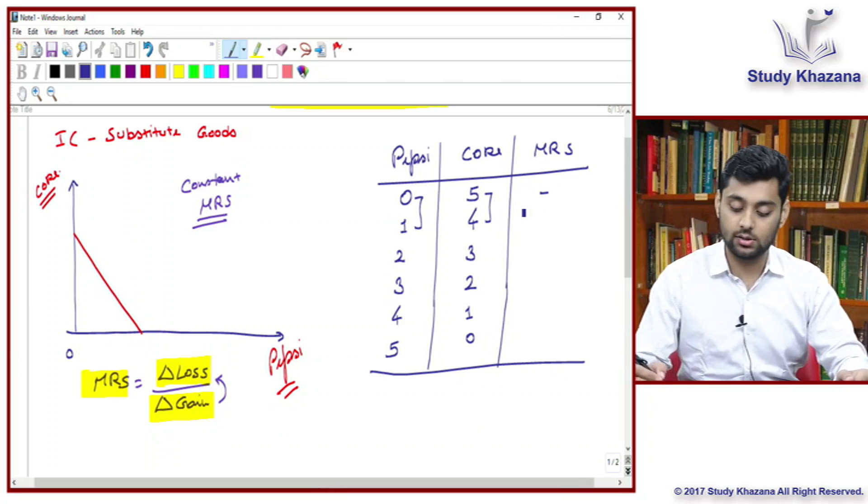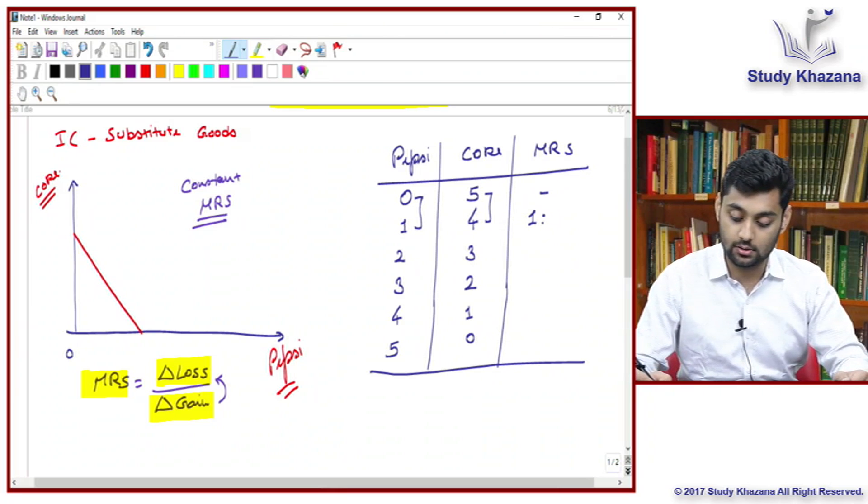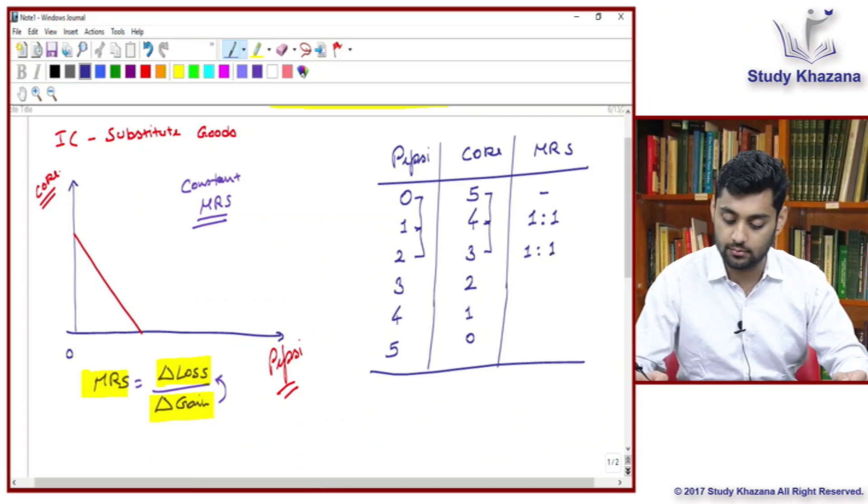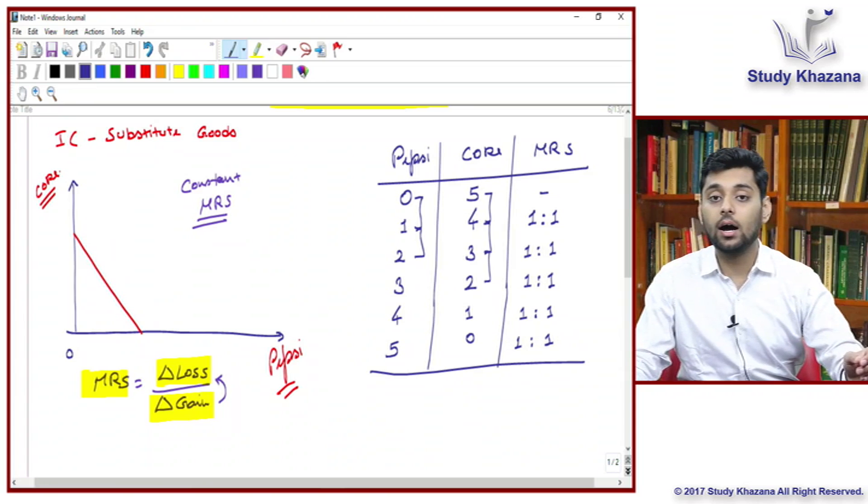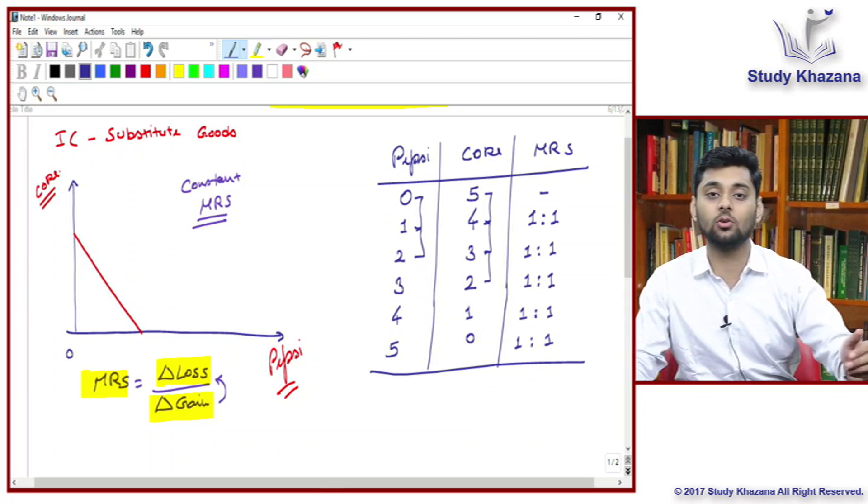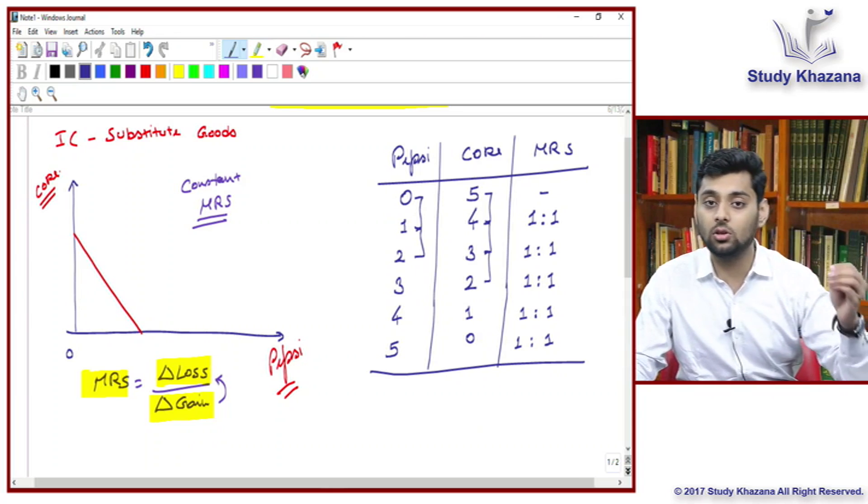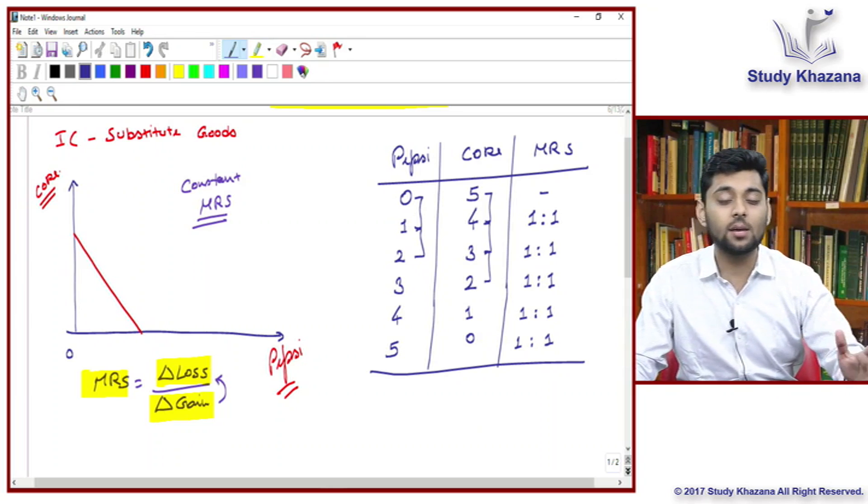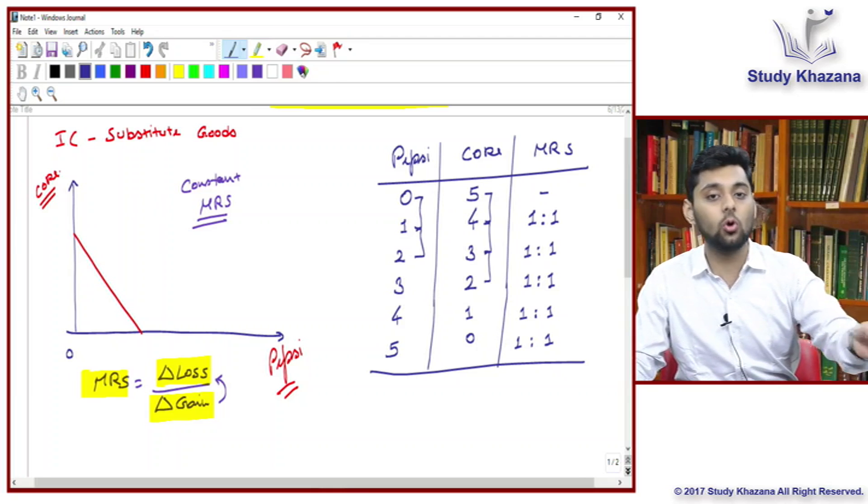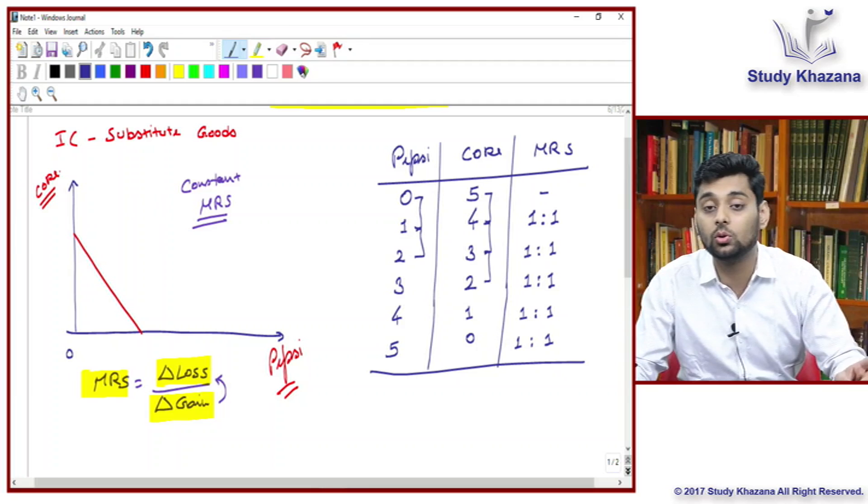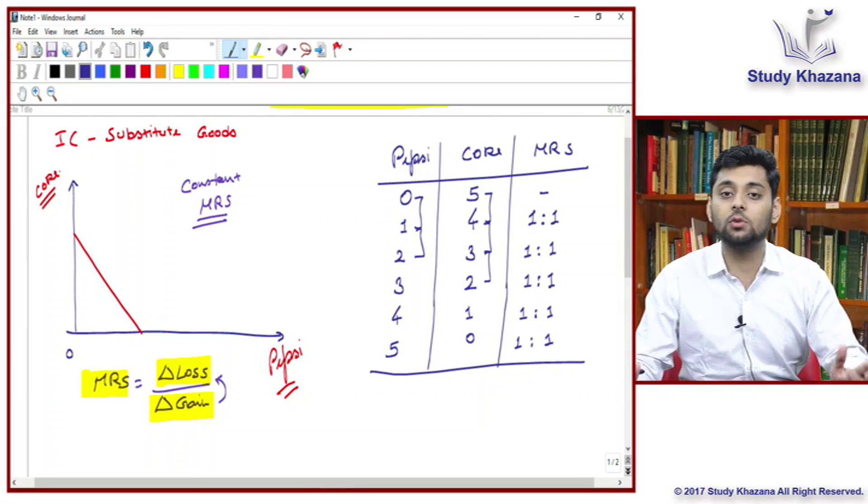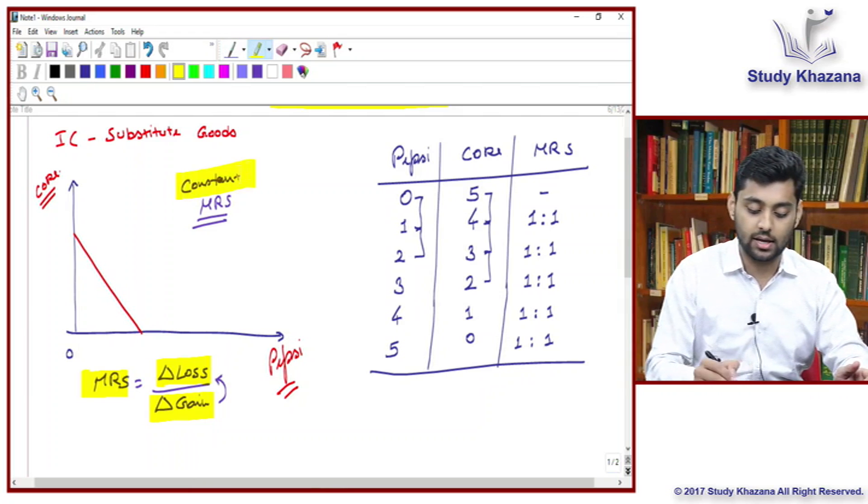You gained only one bottle. So delta loss is one, delta gain is one, that ratio is one by one. Again how many did you lose? One. How many did you gain? One. And this thing goes on, one ratio one, one ratio one, and one ratio one. So it is as simple as that.